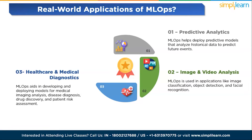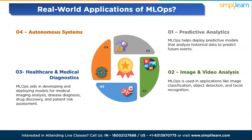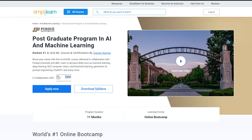The fourth application is autonomous systems. MLOps is crucial for autonomous systems like vehicles, drones, and robotics, ensuring that AI models function reliably and adapt to changing conditions. These are just a few examples, and the applications of MLOps are continuously expanding as organizations explore new ways to leverage machine learning in their operations.